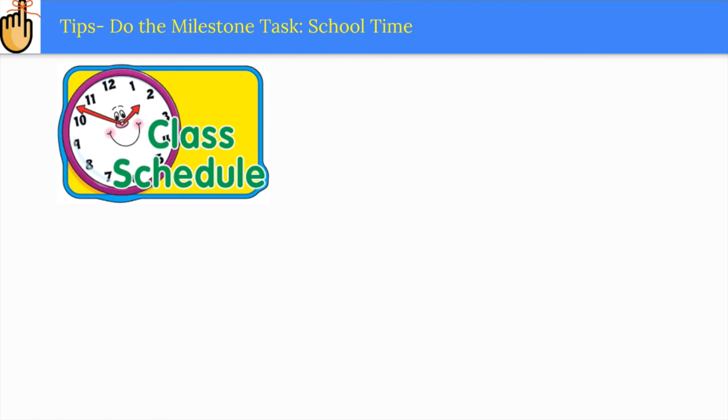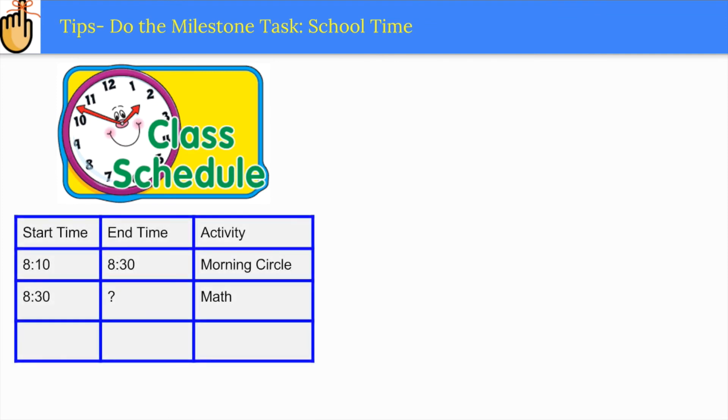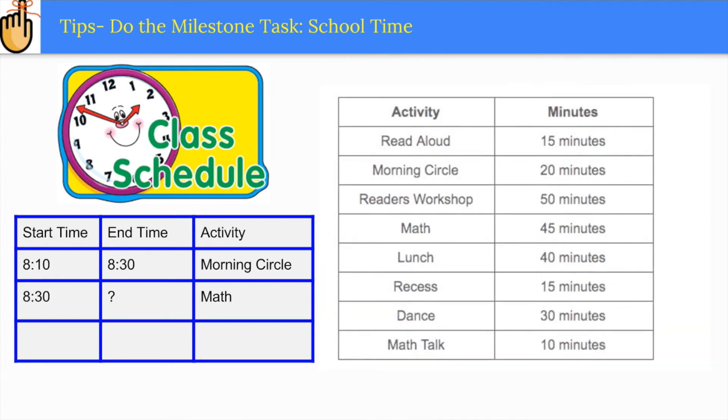In this task, students are asked to create a class schedule of events given only the start time and the length of each activity. You may choose to let students do question one of the milestone task in small groups or with a partner. This part of the task may take one whole class period.